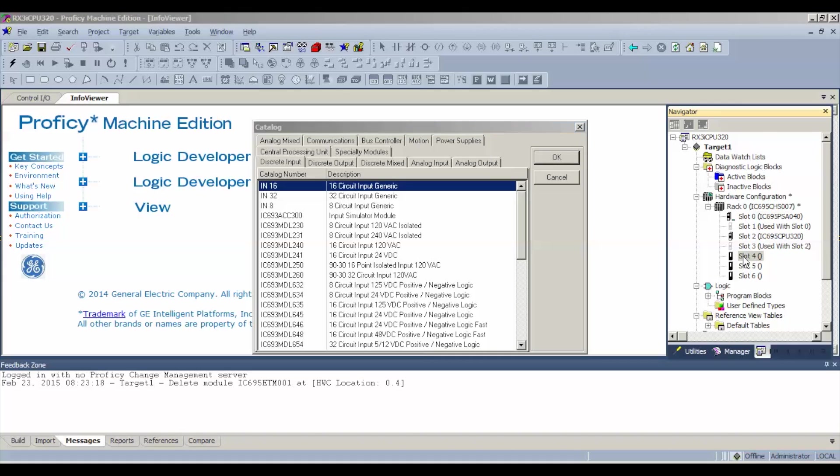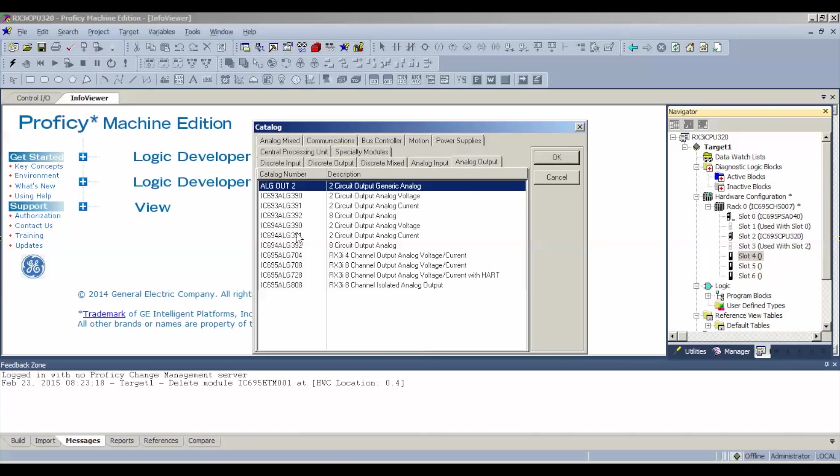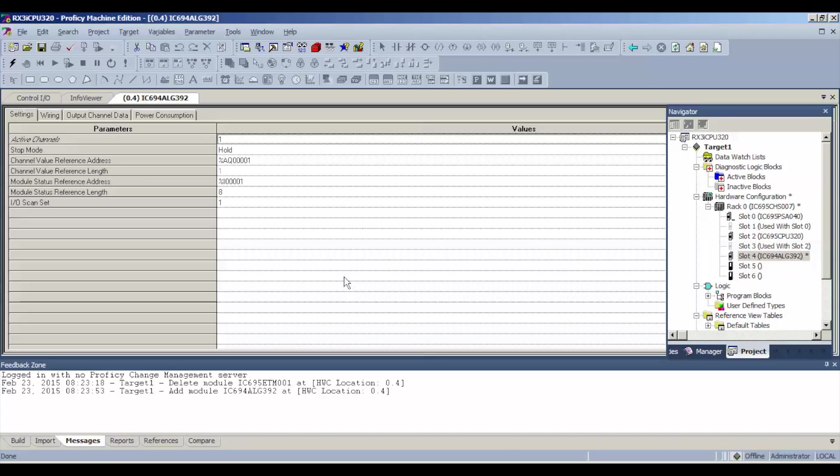I'm going to right click on there and select add module, or you could always double click. It's an analog output card, IC694ALG392 8 circuit output analog. The first thing I want you guys to notice is that when the tab comes up for slot number 4, 0.4, IC694ALG392, it has some settings that you guys are able to look at, or alter, or edit.